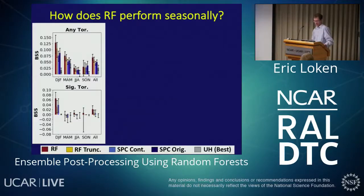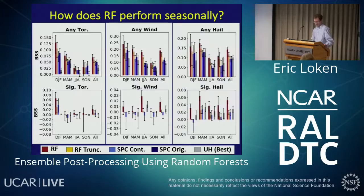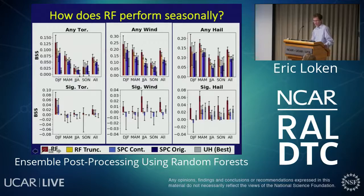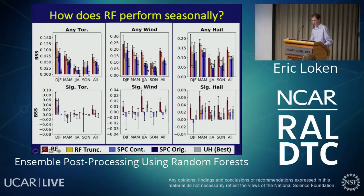I also looked at how forecasts perform in different regions — west, Midwest, and east. In most cases the random forest did best, though not always statistically significant. It really struggled in the west predicting tornadoes because it's such a rare event in that region. It did best for eastern wind reports and also really well for Midwestern and eastern severe hail. Seasonally, the random forest really performs well for wind and hail prediction during the spring and summer — March through August — where the two random forest forecasts significantly outperform the other forecasts.